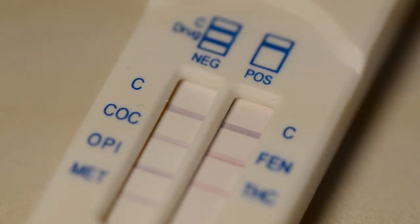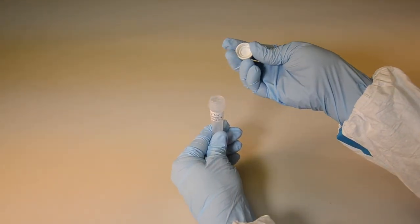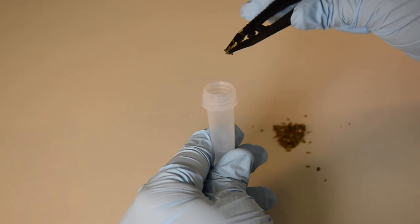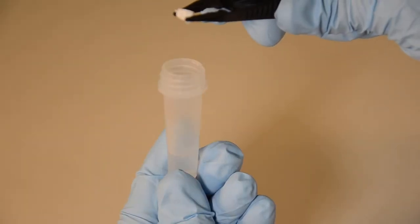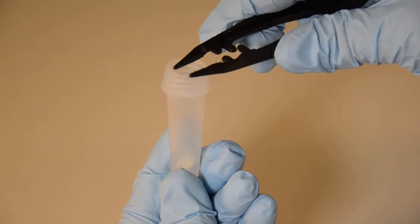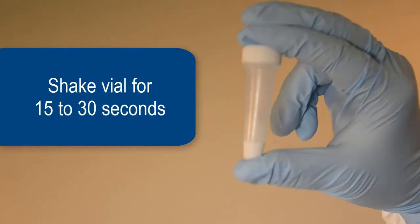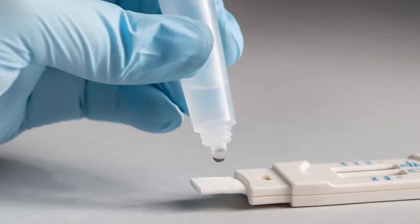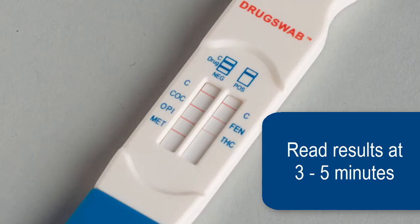To test suspicious substances, remove the cap from the large end of the buffer solution and place the suspected substance into the buffer vial. To test a pill, place a portion of the tablet into the vial. Replace the lid and shake for 15 to 30 seconds. Remove the cap on the smaller end of the vial and add 15 to 20 drops of the buffer solution onto the collection pad. After three to five minutes, read the results.